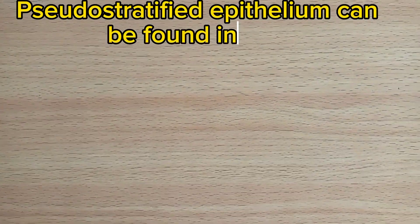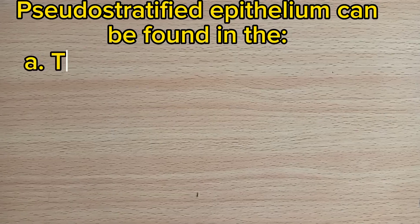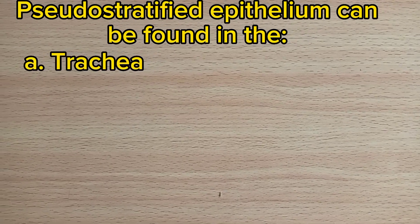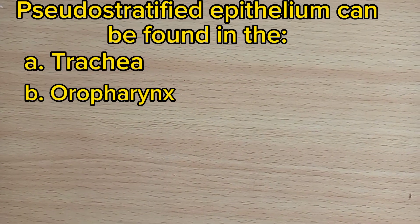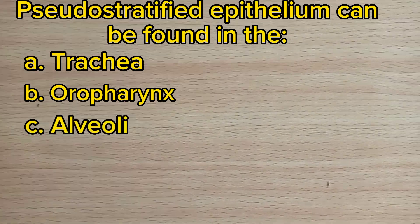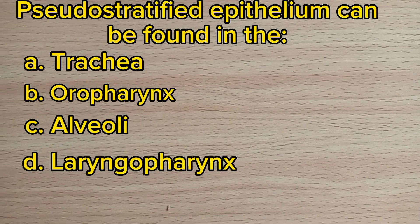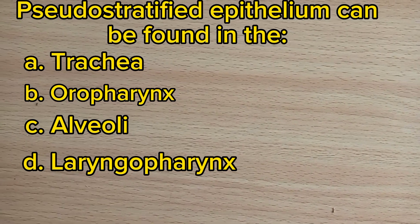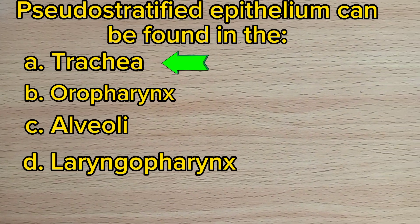Number 10. Pseudostratified epithelium can be found in the: A. Trachea. B. Oropharynx. C. Alveoli. D. Laryngopharynx. Answer: A. Trachea.